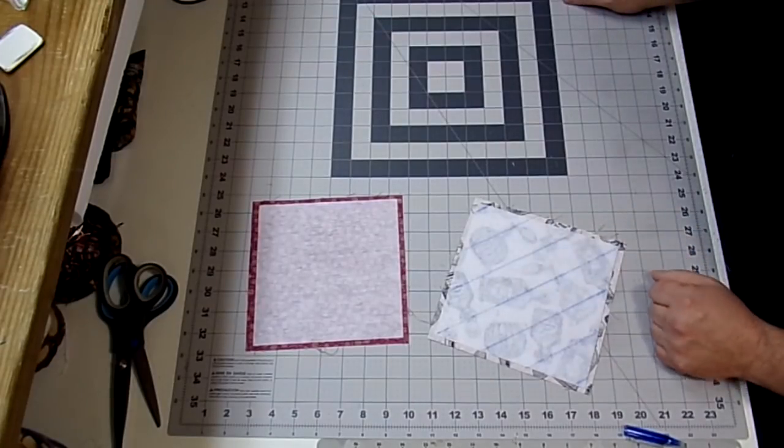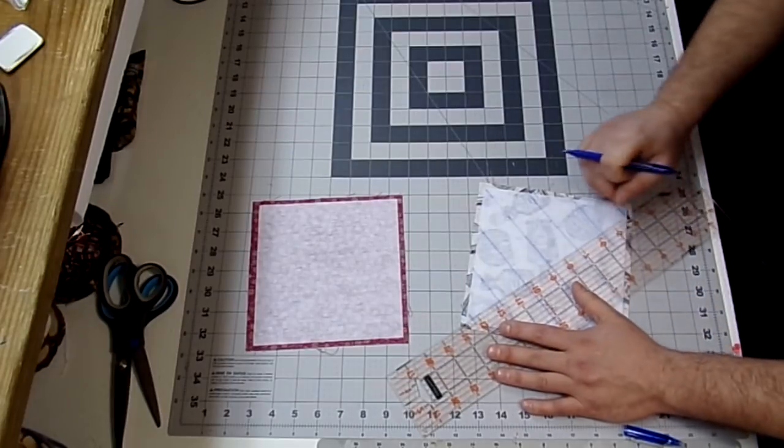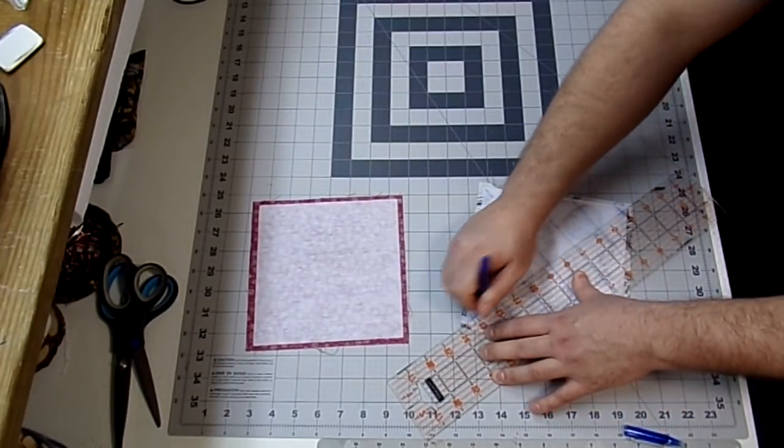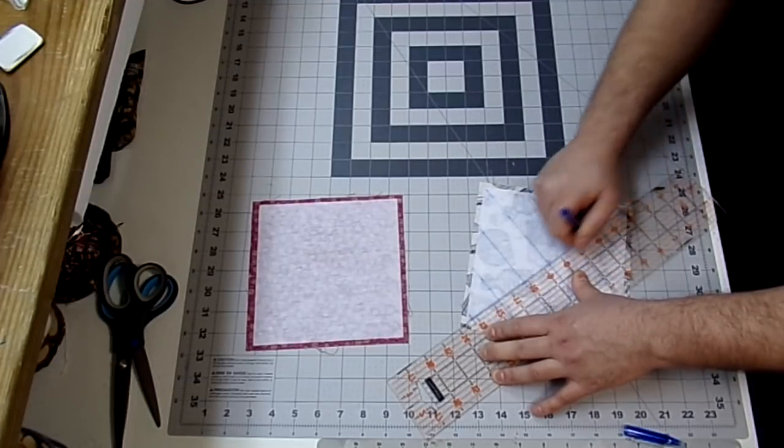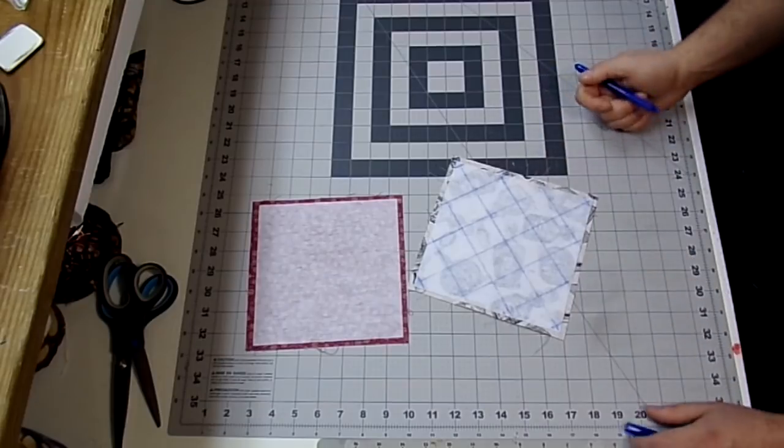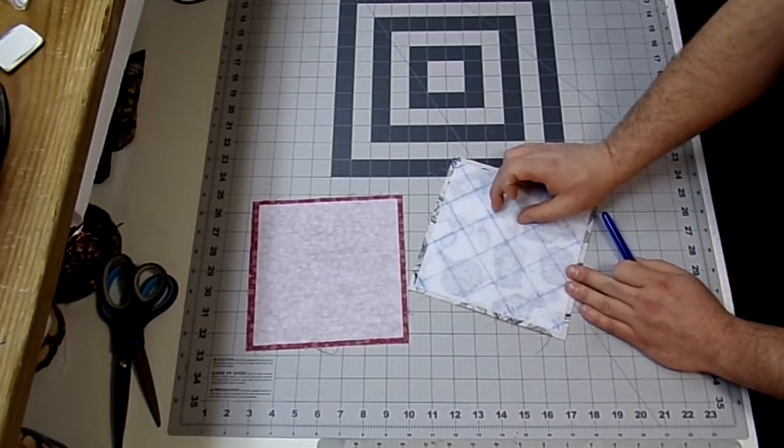And you could stop here, but I kind of like the checkerboard effect. All right, so I'm going to turn it and go the opposite direction. All right guys, so it should look like this. And I use this inch and a half spacing on all three sizes of these glasses sleeves.